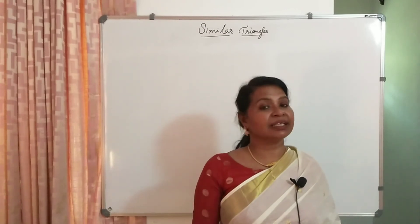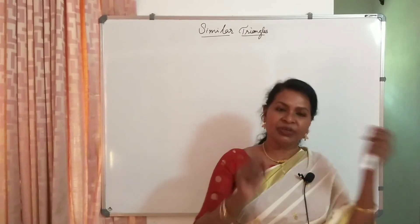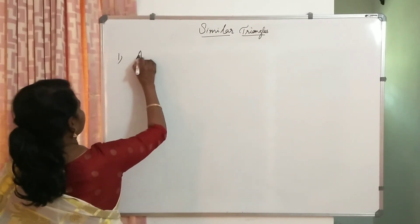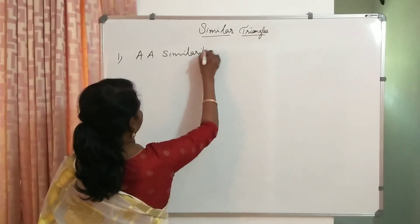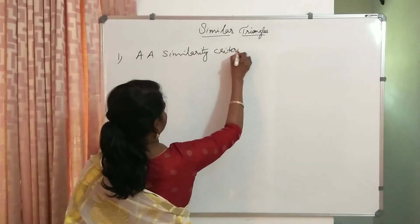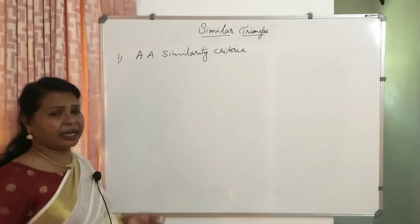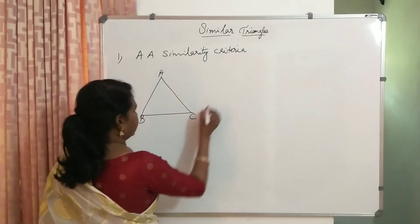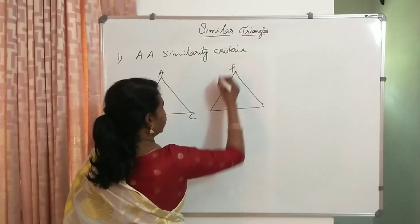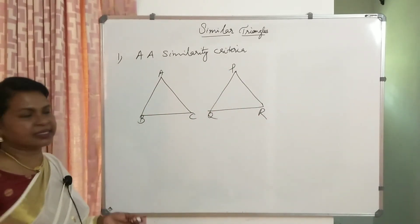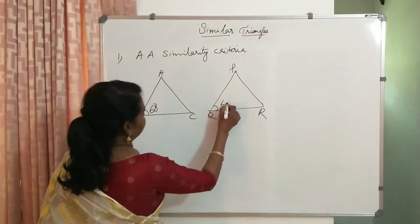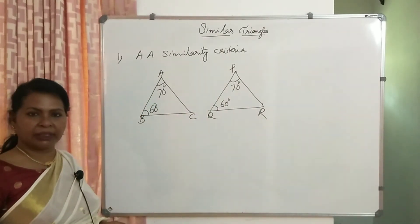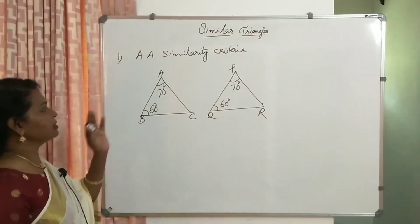What are the criteria — or conditions — to make two triangles similar? The first criteria is AA similarity criteria. See these two triangles: triangle ABC and triangle PQR. If angle B equals 60 degrees and angle Q equals 60 degrees, and angle A equals 70 degrees and angle P equals 70 degrees, then angle B equals angle Q and angle A equals angle P. So they are similar by AA similarity criteria.